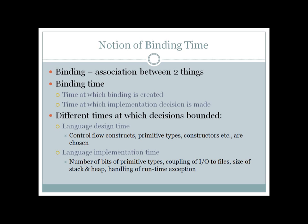For example, during language design time you decide on control flow structures, primitive types such as int, float, double, strings, whether you need constructors or pointers, and all those features. The set of bindings determined while designing a new language is known as language design time.